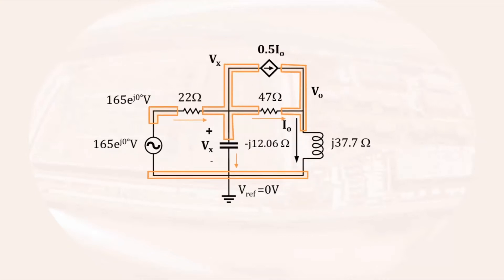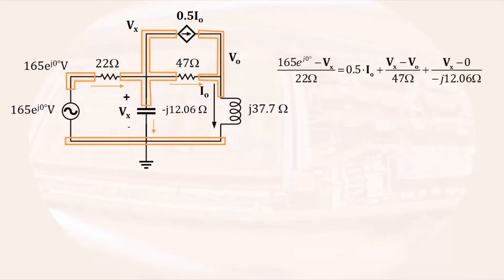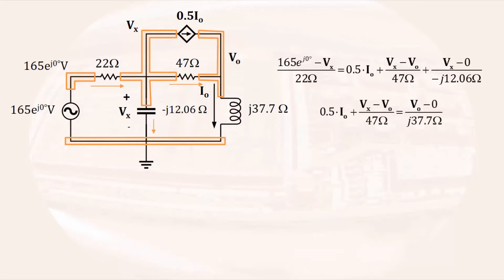Now we are ready to write node equations at the two identified nodes. At the middle node, we have the current through the 22 ohm resistor entering the node, written as 165 e to the j zero degrees volts minus Vx divided by 22 ohms, equal to the three currents that leave the node: the current through the dependent source of 0.5 Io, the current through the 47 ohm resistor which is Vx minus Vo over 47 ohms, and the current through the capacitor which is Vx minus 0 over negative J 12.06 ohms. The right-hand node has two currents entering it: the current of the dependent source 0.5 Io, and the current through the 47 ohm resistor, Vx minus Vo divided by 47 ohms.